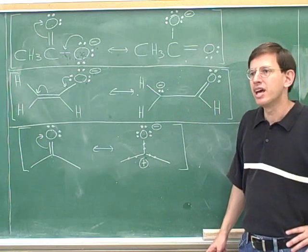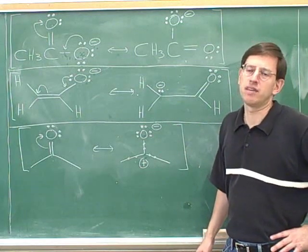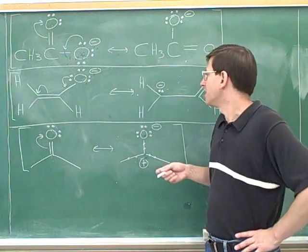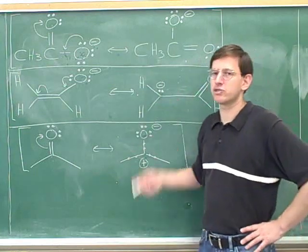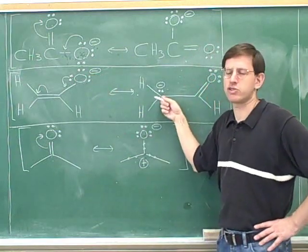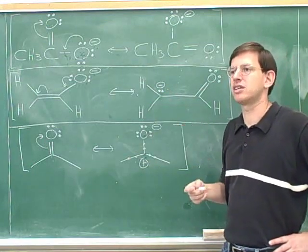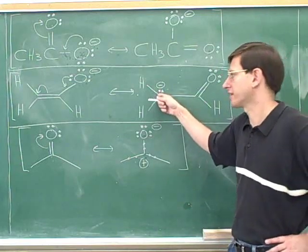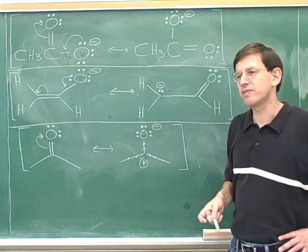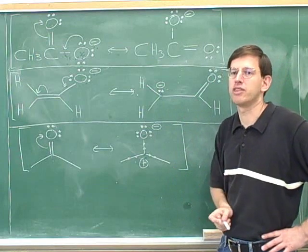Something else we can see from the last two examples is that sometimes the less significant resonance structures give you more information about how a molecule is going to react. For example, with the enolate, we saw that in one resonance structure the oxygen appears eager to react by donating electrons, and in the other the carbon appears eager to donate electrons. It just so happens that in most reactions, it's actually the carbon that donates the electrons, not the oxygen — even though that resonance structure is less significant. This shows that even if a resonance structure is less significant, you should not leave it out, as it can play a very big role in determining how the molecule reacts.